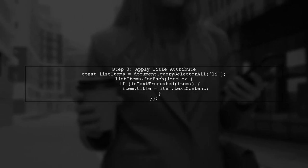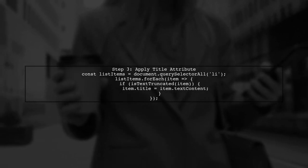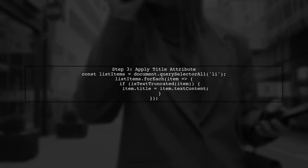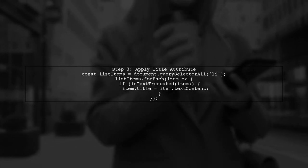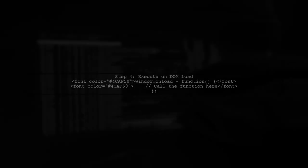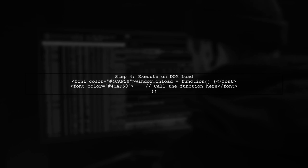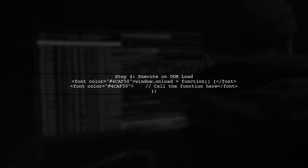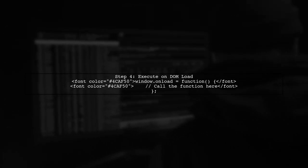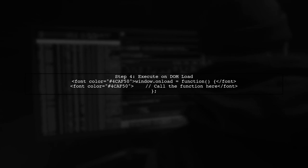Next, we will loop through each list item and apply the title attribute only to those that are truncated. This will allow the full text to be shown as a tooltip on hover. Finally, make sure to call this function after the DOM has fully loaded. This ensures that all elements are rendered before we check for truncation.